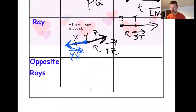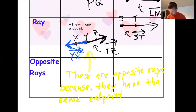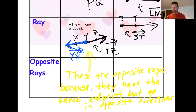That leads us to our last one — opposite rays. Opposite rays are exactly what I just drew here. These are opposite rays because they have the same endpoint but go in opposite directions. So opposite rays are just rays that share the same endpoint but go in opposite directions.